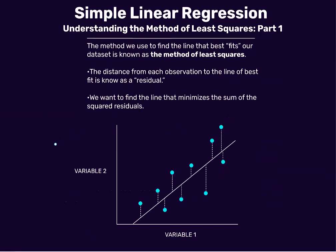Here's the idea behind it. If we have a scatter plot with 10 observations and we put some line in to capture the trend, we can calculate the distance from each observation to the line. That distance is known as a residual. For each observation we can calculate the residual — the distance that each observation is from the line. Our goal with linear regression is to find the line that minimizes the sum of the squared residuals.